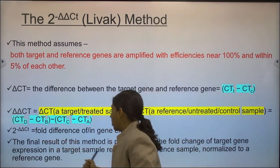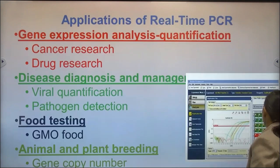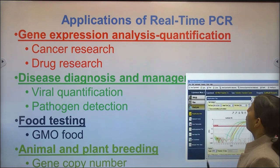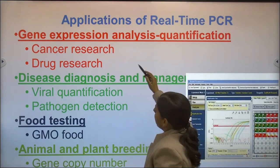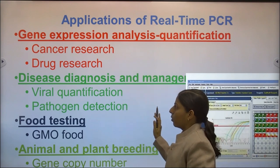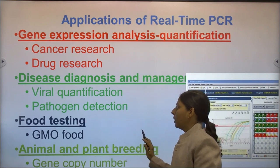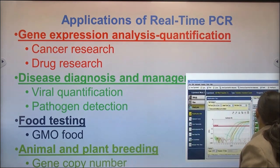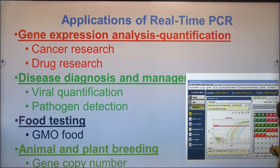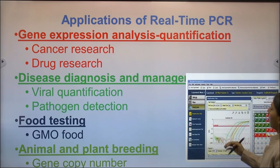Applications of real-time PCR include gene expression analysis, DNA and RNA quantification, disease diagnosis such as viral quantification and pathogen detection, and transgenic testing to identify gene copy number in plant and animal breeding. The graphical output shows sigmoid-type curves representing fluorescence generated from TAMRA and FAM dyes, detected in Bio-Rad or other real-time systems.